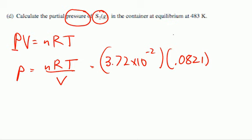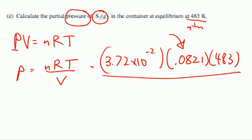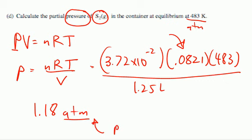And since we're dealing with pressure in atmospheres, we're going to use 0.0821. And the temperature in Kelvin was given to us. If that was Celsius, we'd have to add 273. And we're going to divide that by the volume of the container, which was 1.25 liters. And the answer is going to be 1.18 atmospheres. That's the unit for pressure.